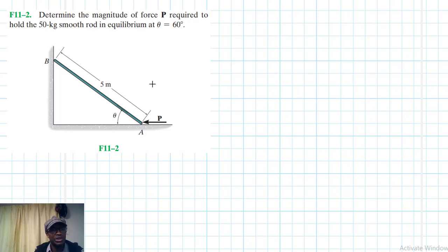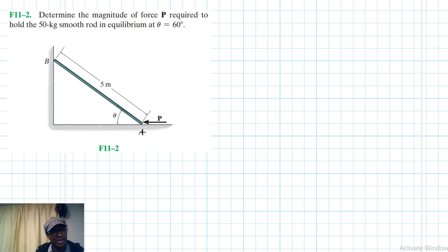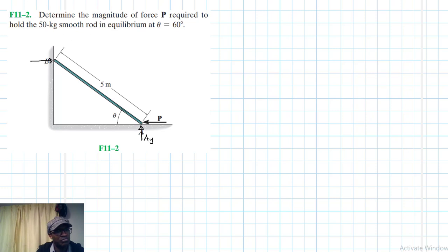The first step when using this method is to draw the free body diagram, and then draw a second free body diagram for the displaced structure. Since there is no friction in this problem, we expect a normal force A_y at one support and a normal force B_x at the other.